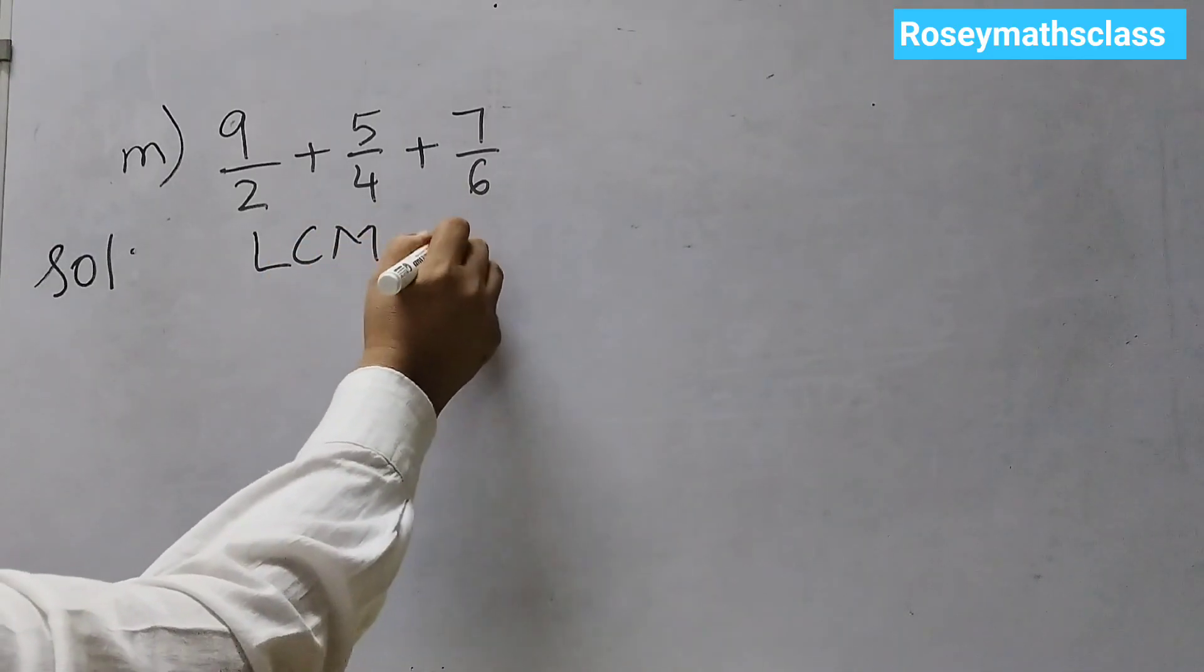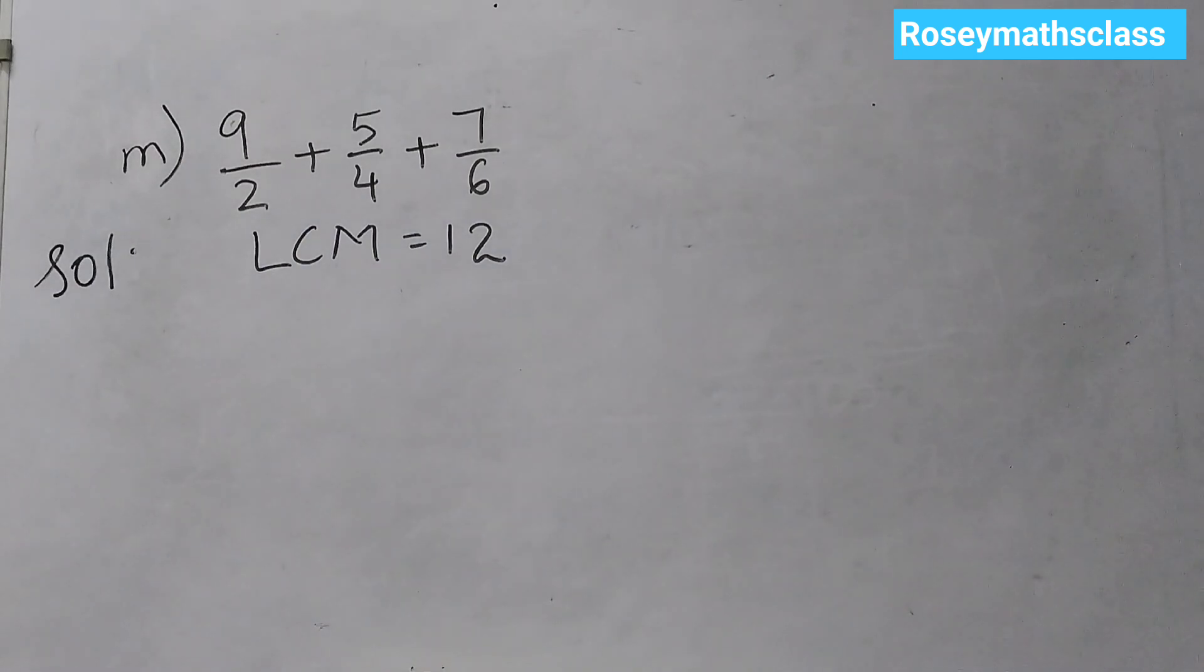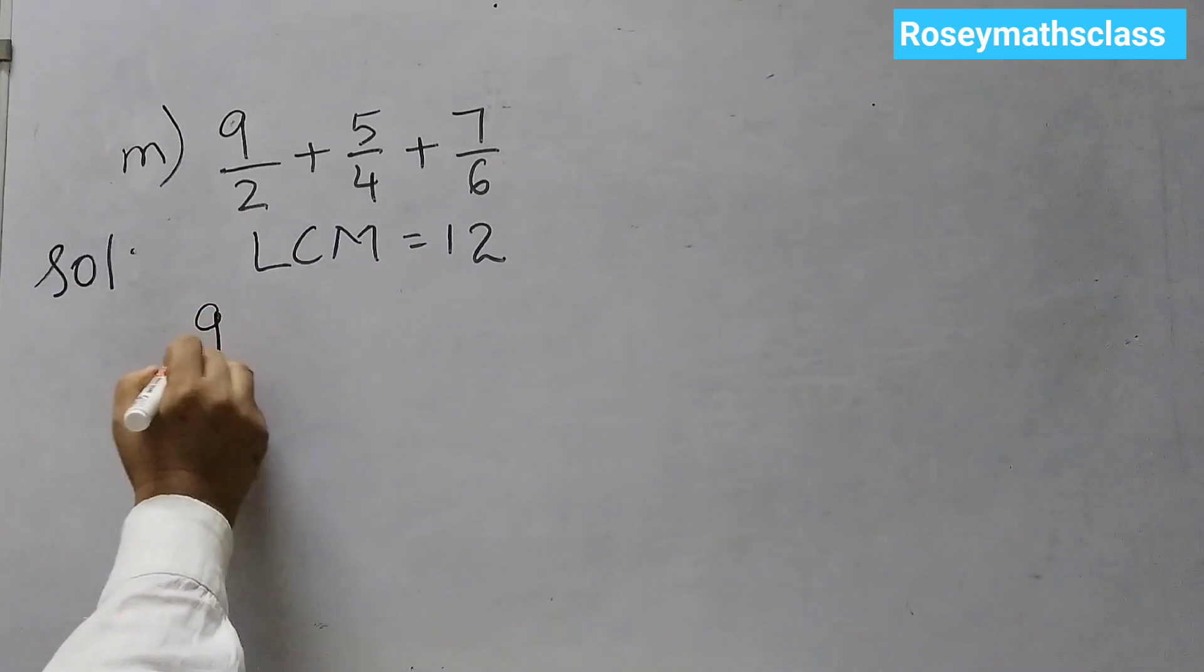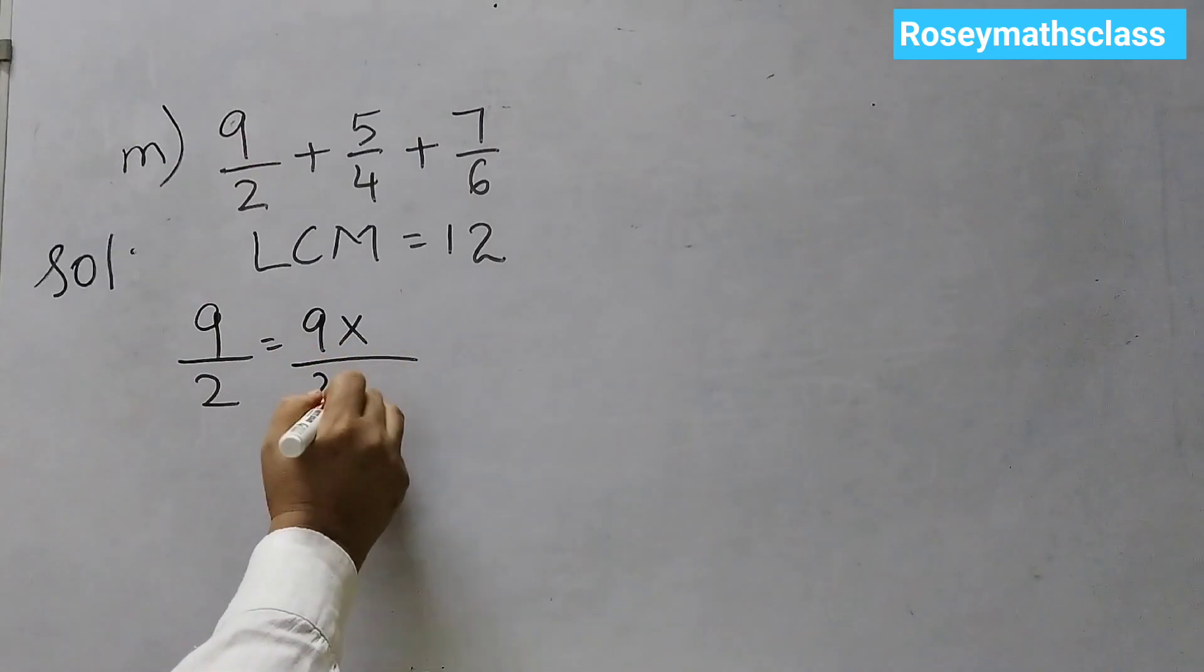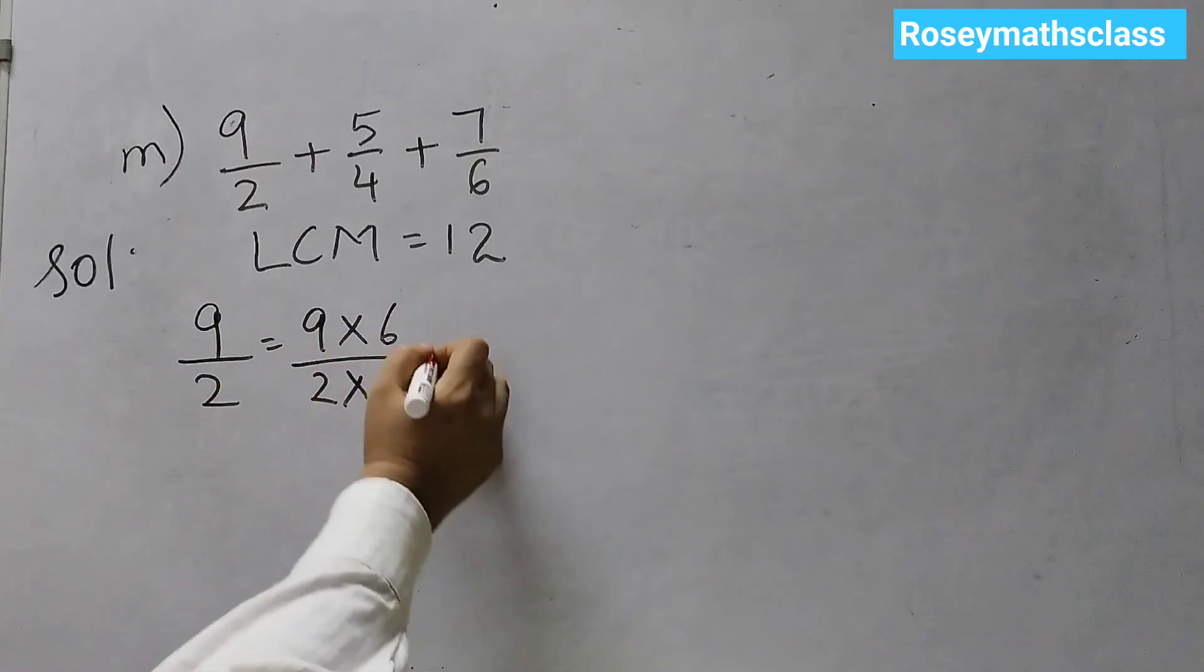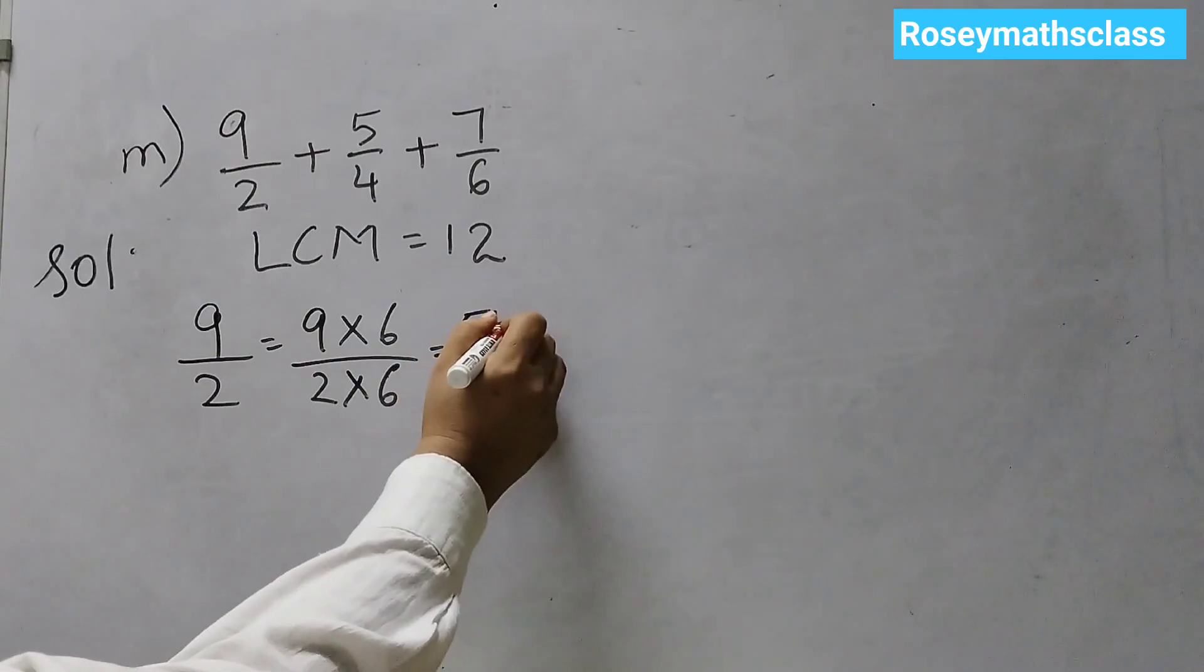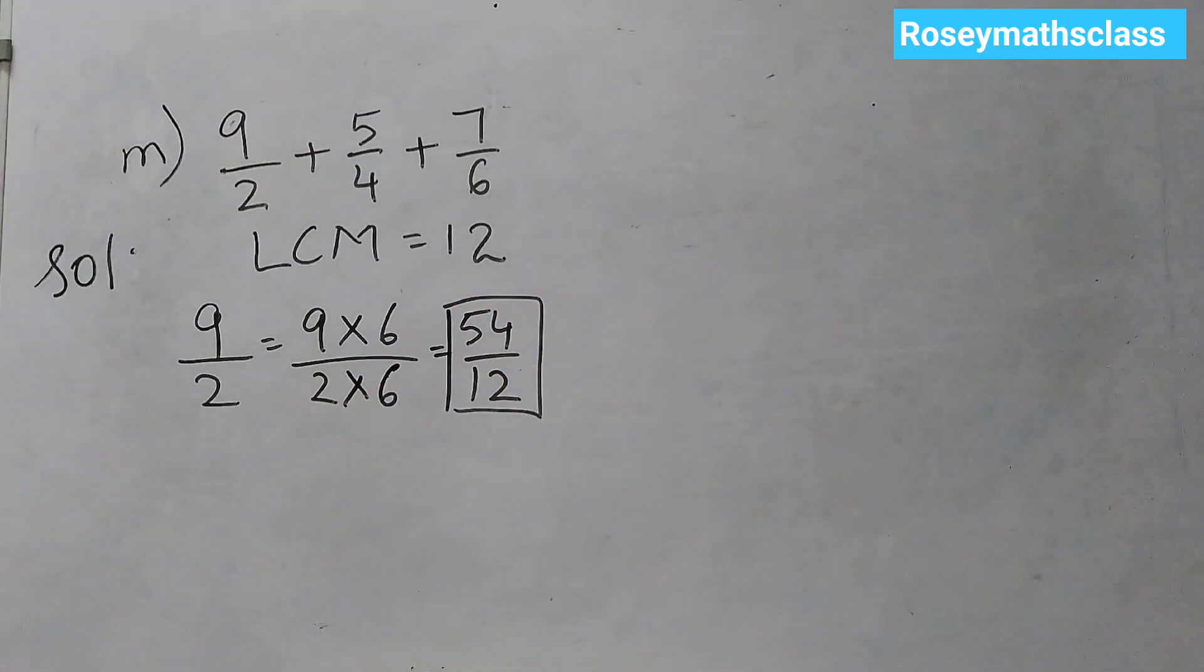LCM is 12. And now all these denominators we need to convert to 12. First, 9 by 2 will be 9 into, what number do I multiply here? 2 sixes are 12. So, 6 and 6. 54 over 12. First equivalent fraction we have got.